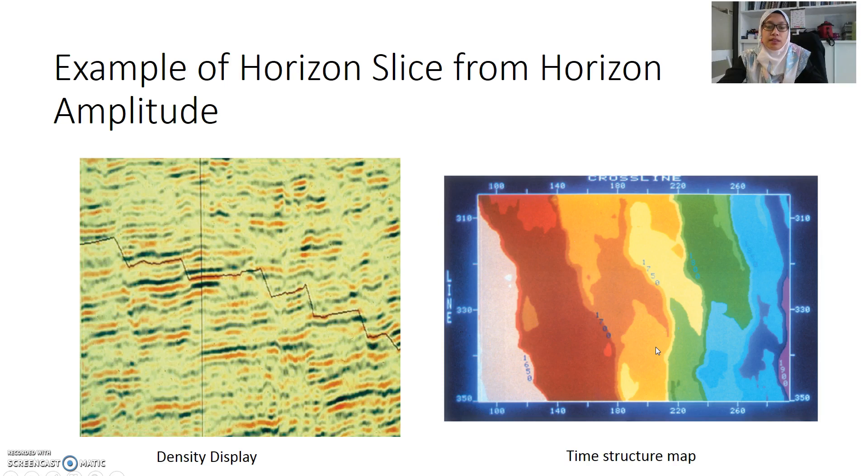This is examples of horizon slice or horizons from one surface, where we pick these horizons. They are picking on the red horizons in these examples. It's a very old data but still helpful. This is examples from your textbook, Alistair R. Brown.